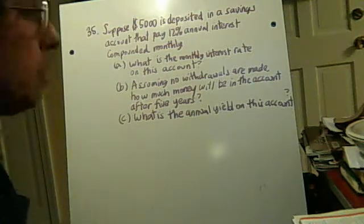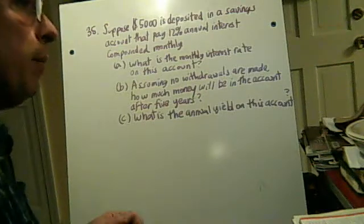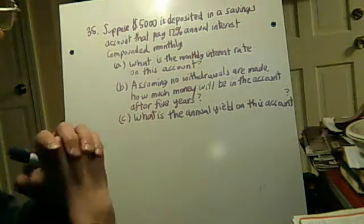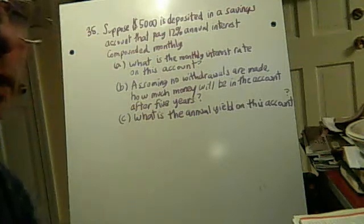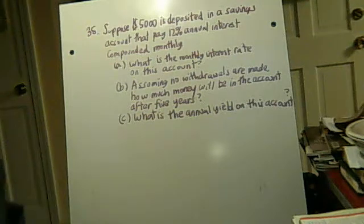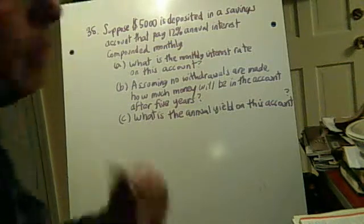Suppose $5,000 is deposited in a savings account that pays 12% annual interest compounded monthly. That's a good interest rate, 12%, that's a lot higher than what we get now. What is the monthly interest rate on this account, that's (a).